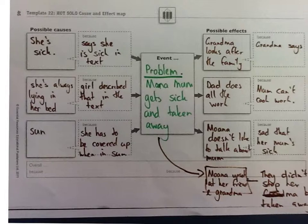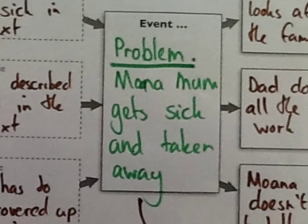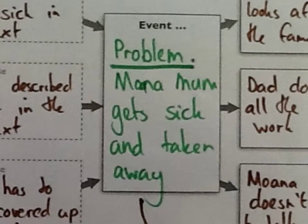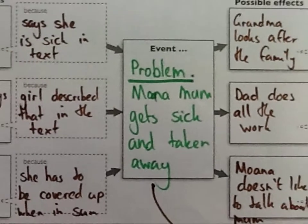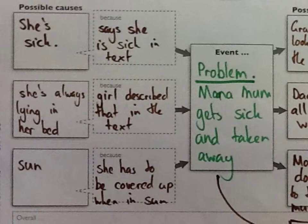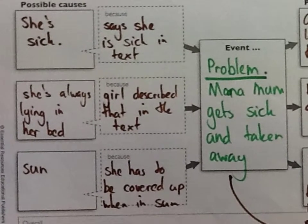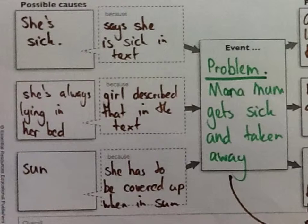What we've done here is we're looking to explain the problem. When we explain something, we need to do the cause first. So what were the causes of the problem? We identified that she's sick — because it says she's sick in the text, she's always lying in bed, and the fact that she has to be covered up in the sun is an issue. Those are part of the reasons that have caused this problem.